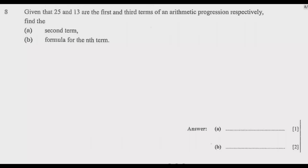Question 8: given that 25 and 13 are the first and third terms of an arithmetic progression respectively, find the second term — that's part a — then part b, find the formula for the nth term. So the question requires us to find the second term and then find the formula.